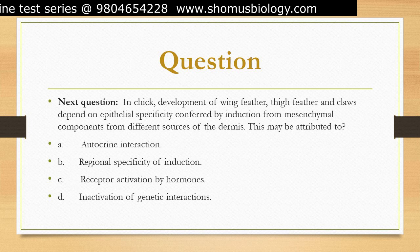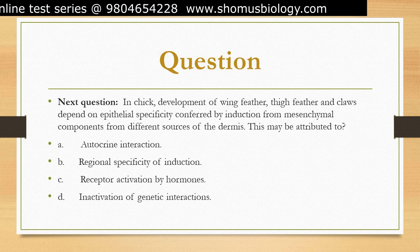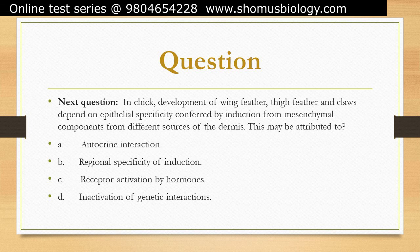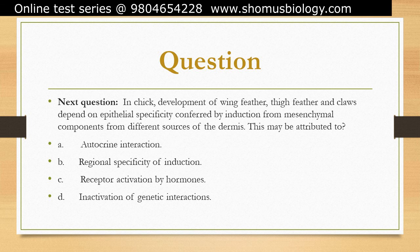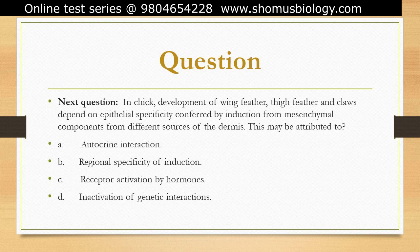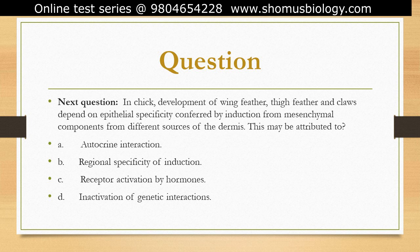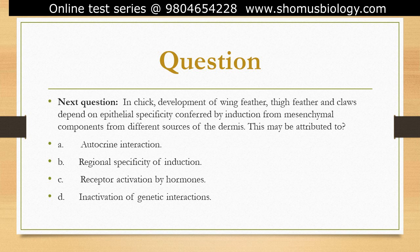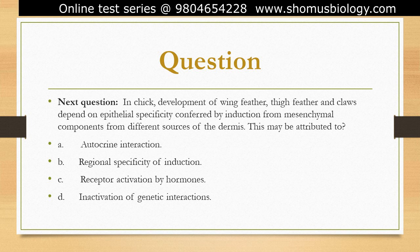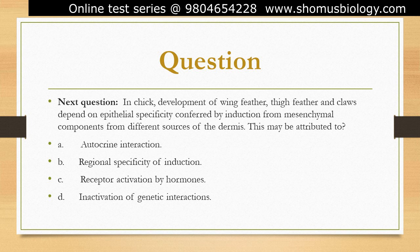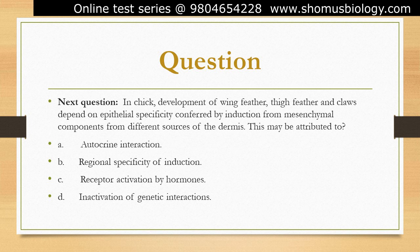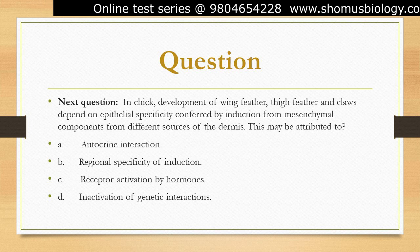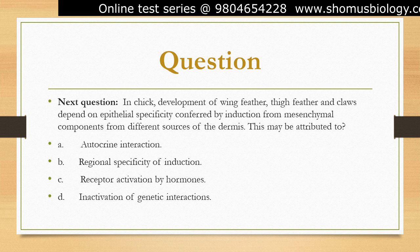During embryonic development, cells in different regions of the body receive different signals from their surrounding tissues, which leads to the activation of different sets of genes and the development of distinct structures. In the case of wing feather, thigh feather, and claws in chick, the epithelial specificity is conferred by induction from mesenchymal components from different sources of the dermis.